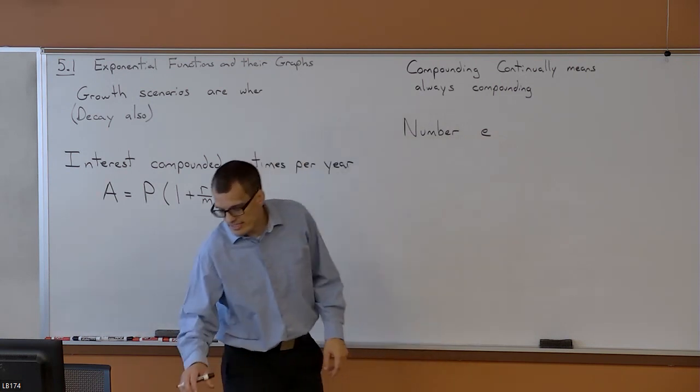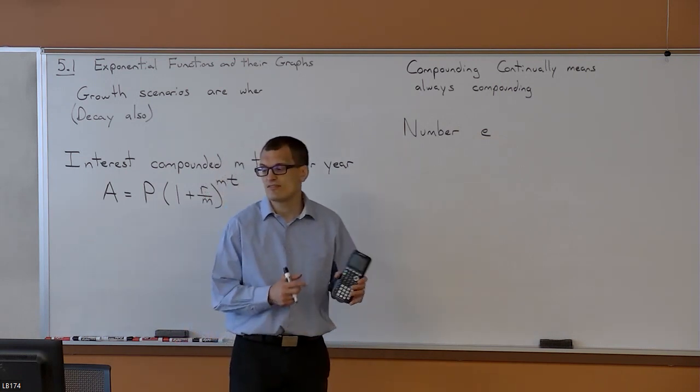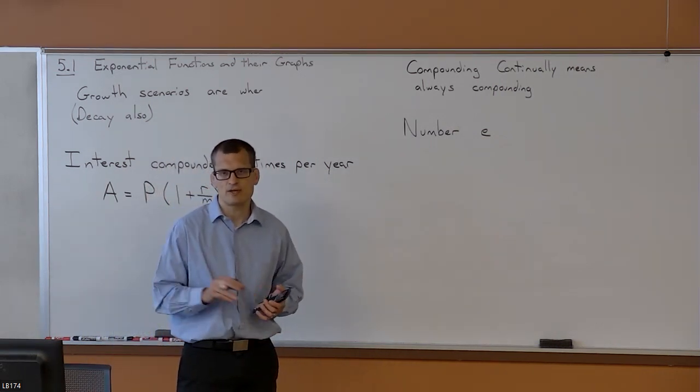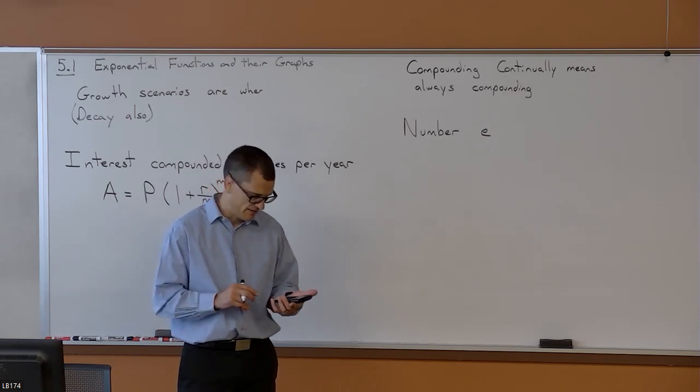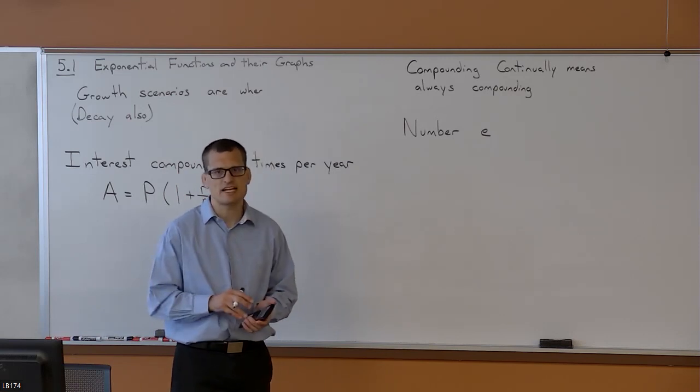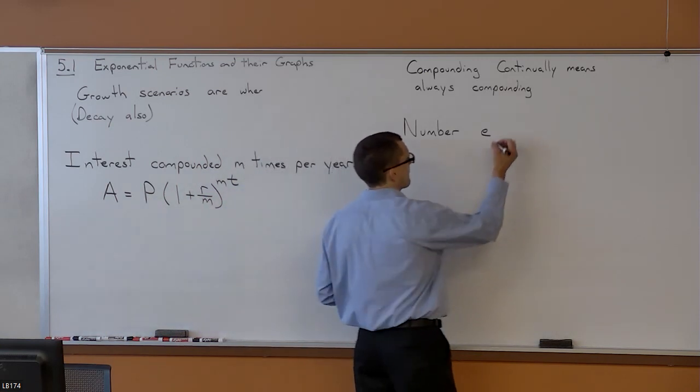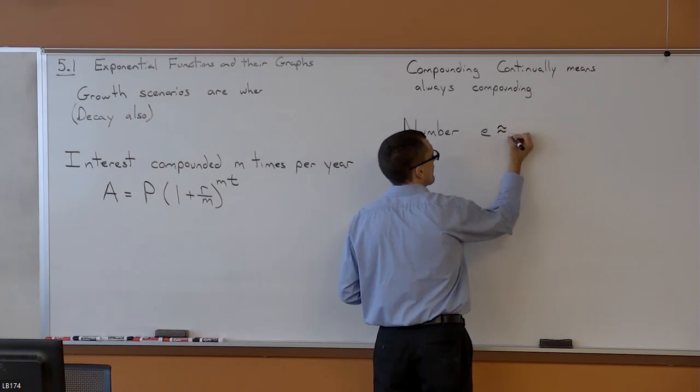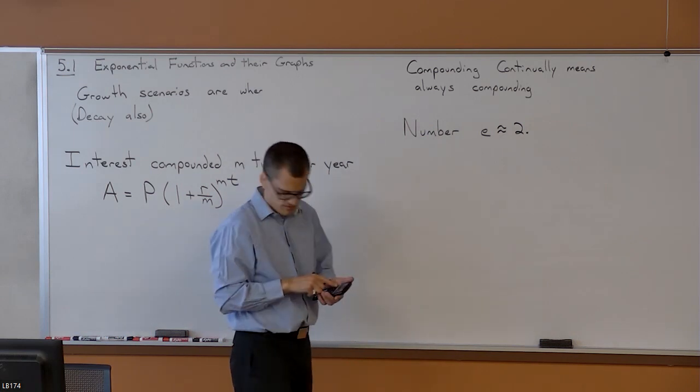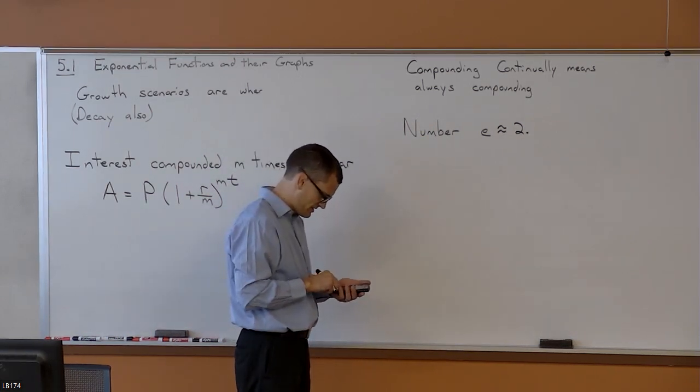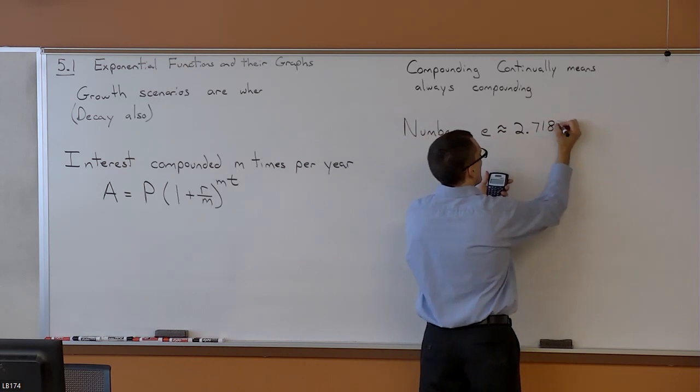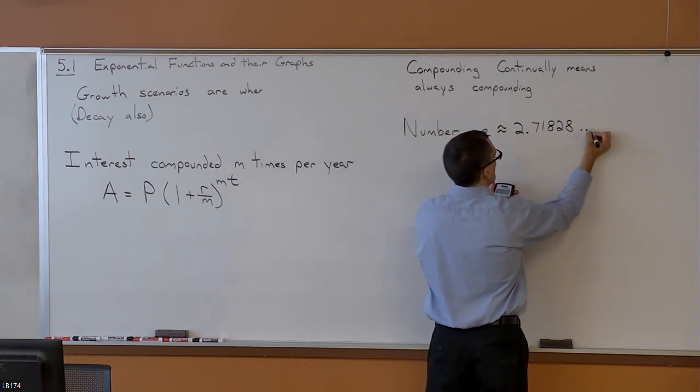Now, every calculator has an E on it. I should say every calculator that you have for this class, whether you have the TI-30 or whether you have the TI-84, there is that E on it. On the TI-30, I'll show you this in a second, it's on the left-hand side. But essentially, it is approximately 2.7, but let me write that down, 7-1, 8-2-8, and it just keeps going and going and going.